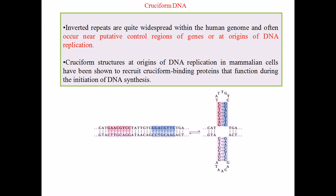If we look really closely, we can find G-A-A-G-G-T-C-C on one side and C-C-T-G-G-C-A-G on the opposite side. If we place a mirror on the opposite strand, we can find a mirror repeat for this sequence — meaning we are talking about a palindromic sequence. These palindromic sequences, which are inverted sequences found on opposite strands, will help the DNA form a cross-shaped structure called cruciform DNA.